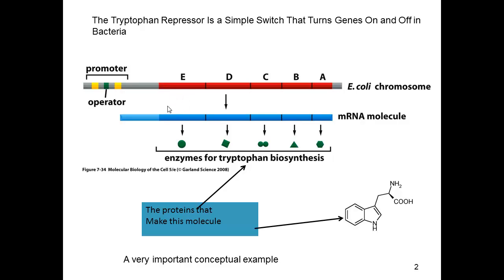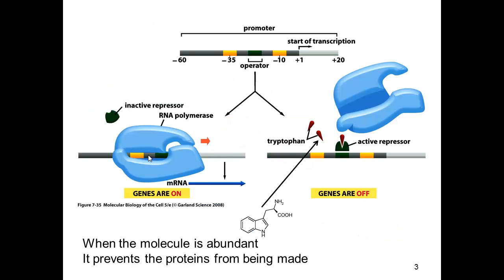Here is the operon for tryptophan biosynthesis. There are five genes that make five proteins, each playing a different role in the biosynthesis of this amino acid — with an amino end, alpha carbon, carboxy end, and a large side chain. These five genes are coordinately regulated. Since this is an operon, it's a polycistronic mRNA, all regulated by this promoter region, with the idea that if you need to make one of these enzymes, you need to make all of them, because there's not much use in going part of the way to making a tryptophan molecule but not completing the task.